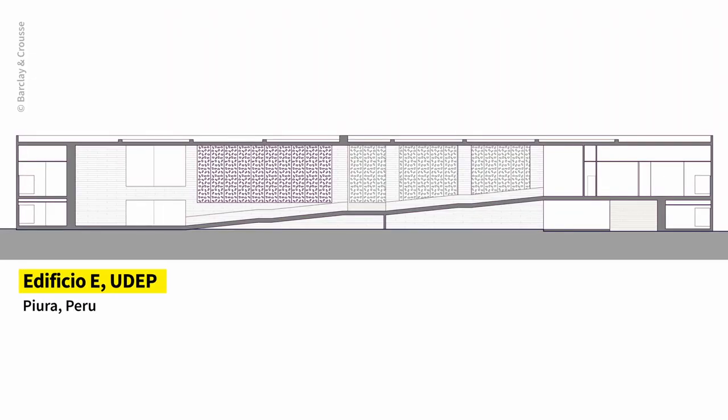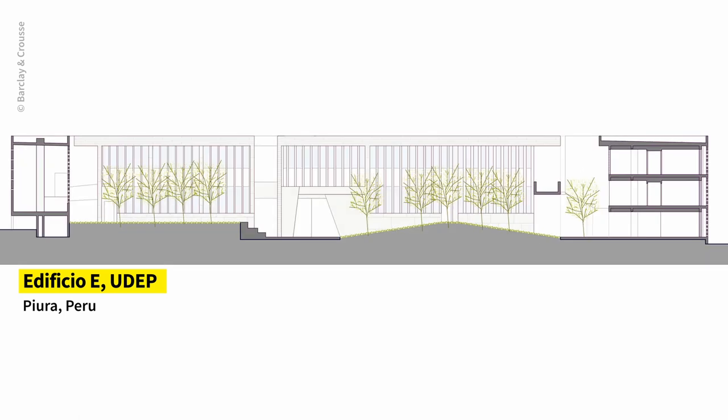Sections definitely allow us to connect the spaces we are creating with the territory, the topography, the context, or the climate. It establishes the relation between spaces, but also between spaces and their context. It's a way to think about the permeability of boundaries.